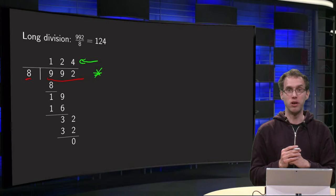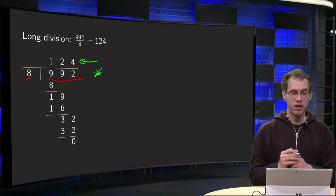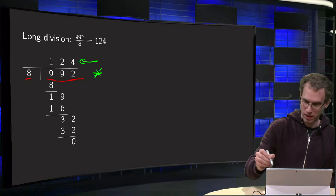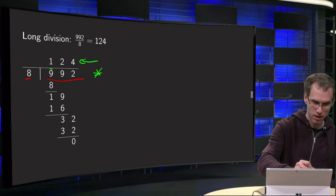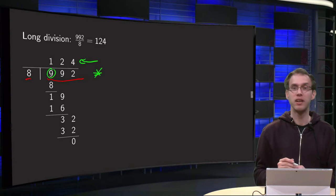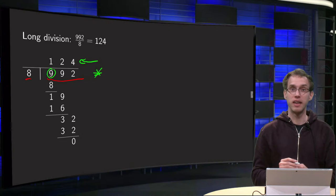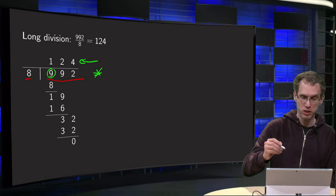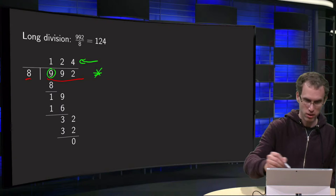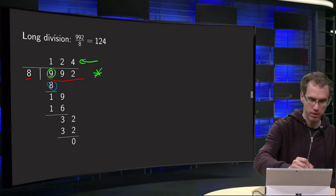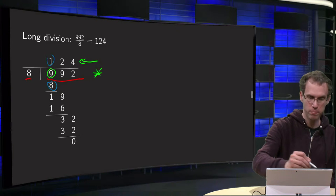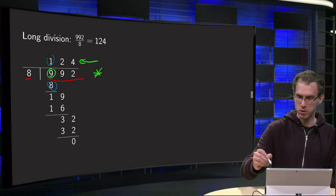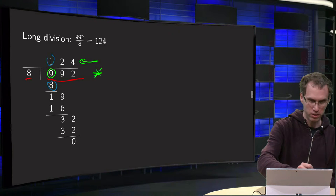So how do you do the long division? First you look at the first 9 over here. How often can you get 8 into that? You can do it only once. So you write down the 8 over here and the 1 over there, and then you subtract, and you end up with the 1 over here.